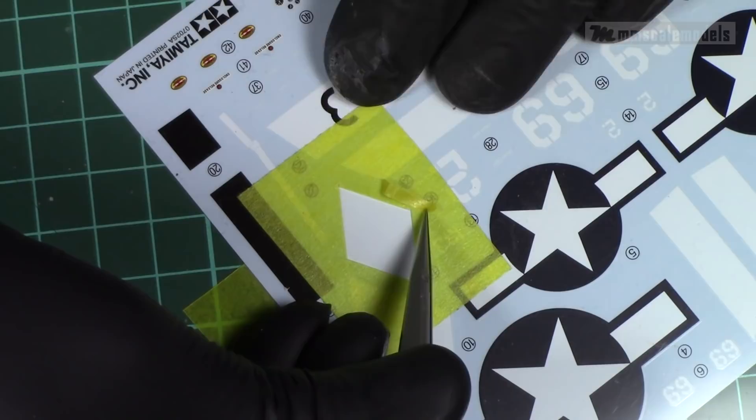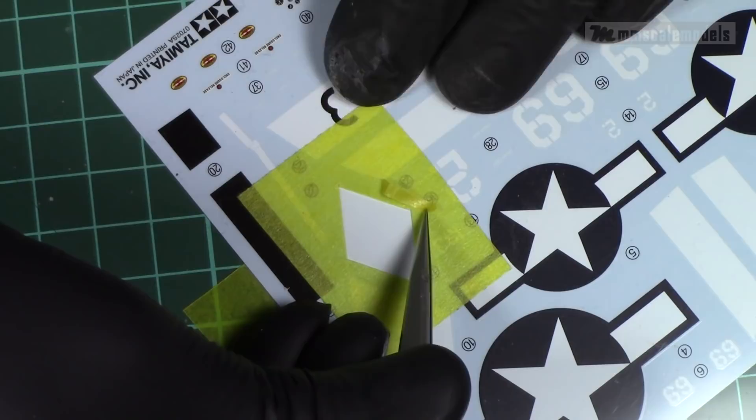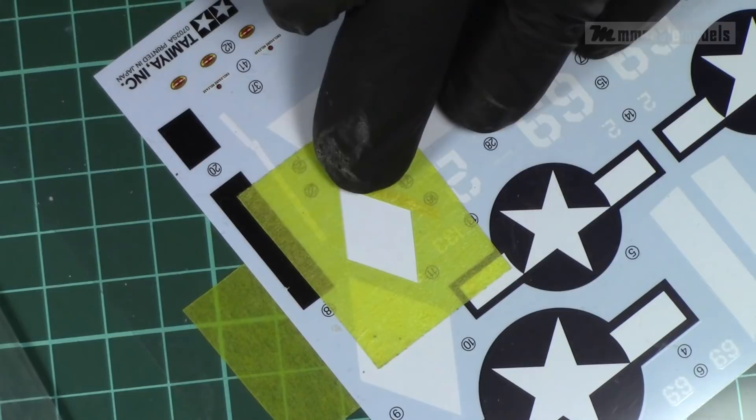To fix the lifted edges we can simply put strips of masking tape over them. Just be careful to keep the reinforcing tape within the stencil.